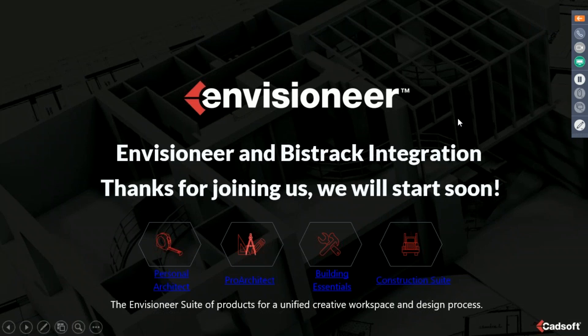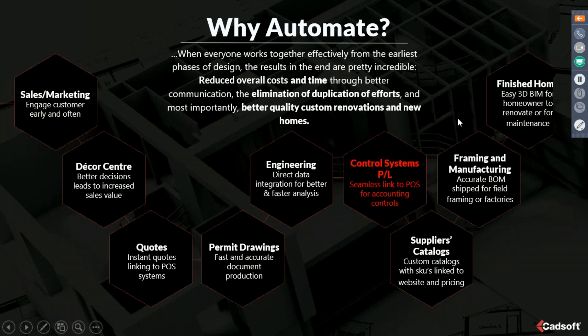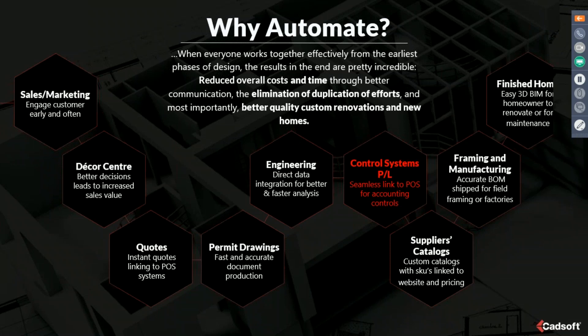In our past presentations in the integration series, we've been talking about why automate — discussing sales and marketing, putting information in your decor centers that you can pull from the Envisioneer model, creating your quotes, permit drawings, and sending things over for engineering. Today we're going to focus on control systems and creating links to point of sale systems for accounting and ordering purposes.